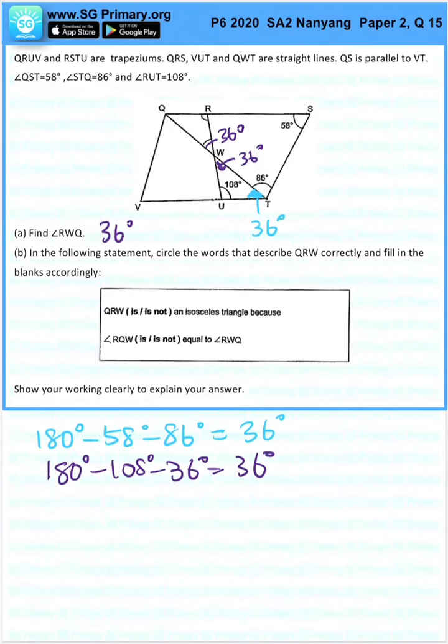Now it is an isosceles triangle because these two angles are the same. We know that RWQ is 36. Based on this line here, we know that this is also 36, making QRW an isosceles triangle.